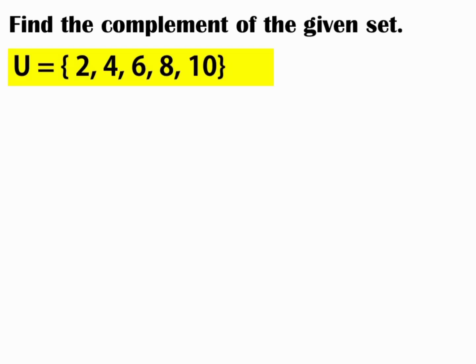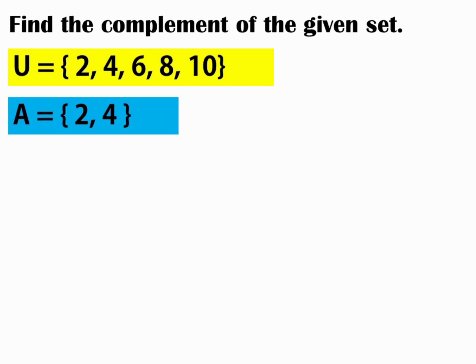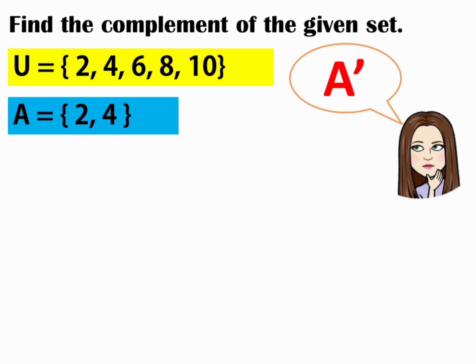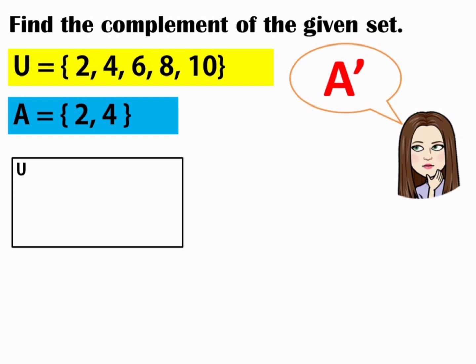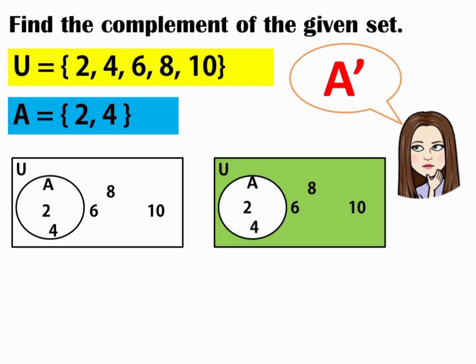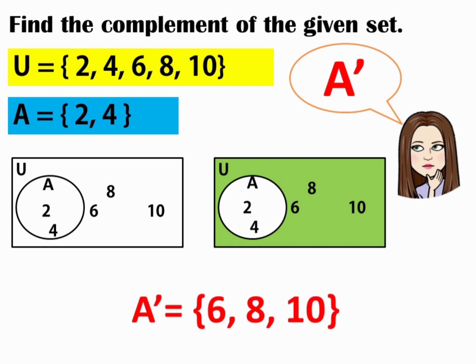Now, let's illustrate the complement of a set using a Venn diagram. For example, we have U is equal to 2, 4, 6, 8, 10 and A is equal to 2 and 4. Now, we are going to find the A complement. First, make a rectangle to represent the universal set. The elements of the universal set are 2, 4, 6, 8, 10 and the elements of set A are 2 and 4. The circle represents the set. To illustrate the complement, the shaded region will be your answer. Therefore, A complement is equal to 6, 8, 10.